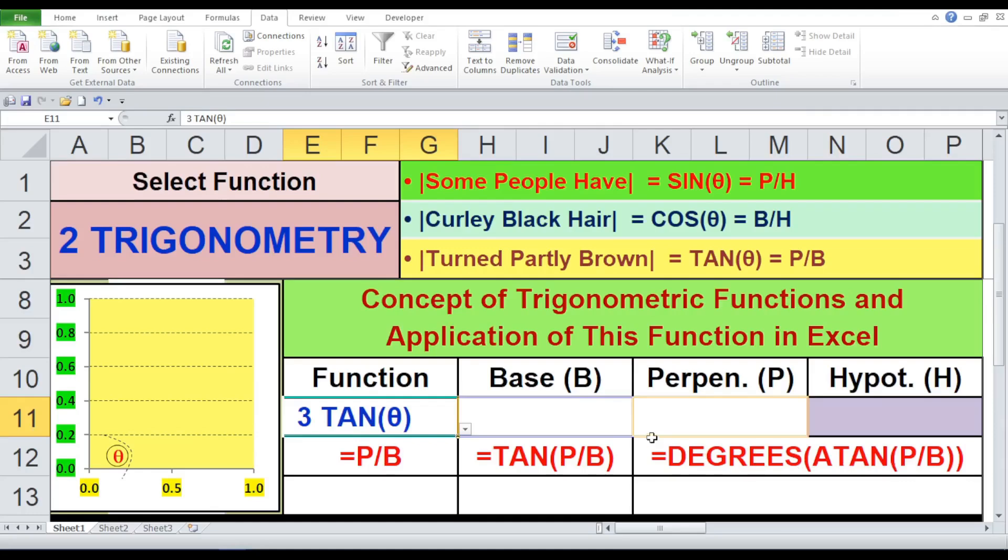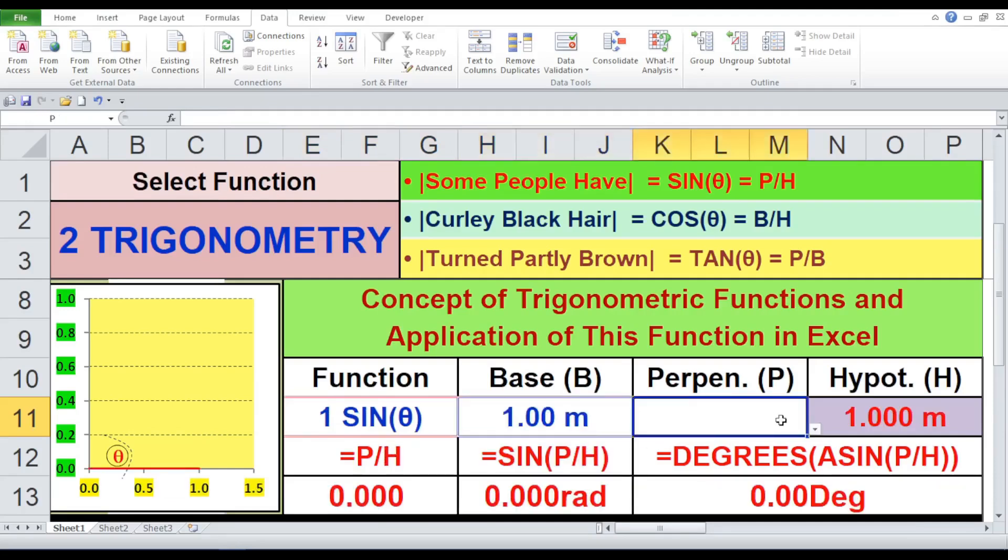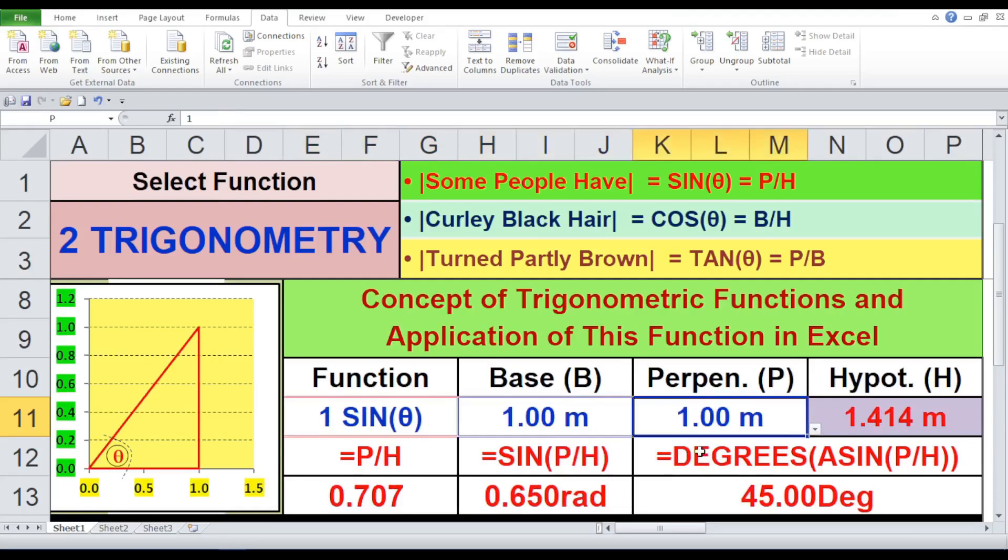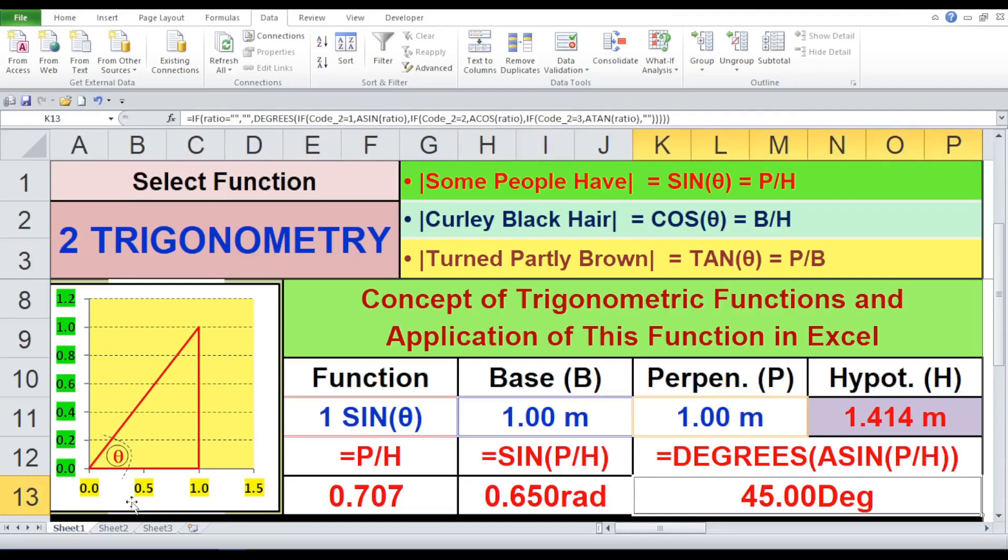Let's try a few examples. Trial 1A, function sine. Base B equals 1 meter, Perpendicular P equals 1 meter, Hypotenuse H equals 1.414 meters. Calculated P by H equals 0.707. Sine P by H equals 0.650 radians. Base angle theta equals 45.00 degrees.